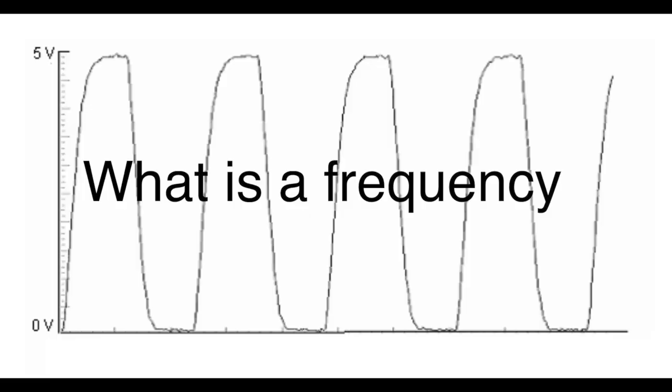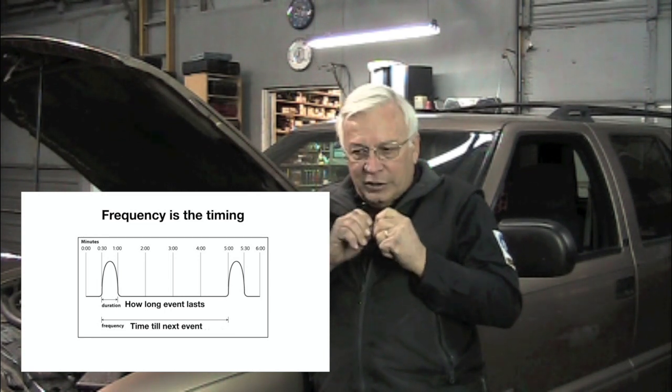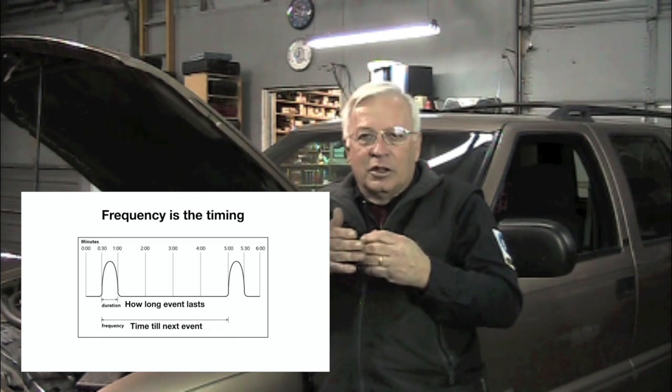So what is a frequency? Frequency can basically be explained like this: it's on/off time. If we're going to flow current, we've got to turn it on and flow some current and then turn it off. The longer or the shorter the on/off time is what creates the frequency — makes the frequency longer or shorter — and that's what we're measuring on the mass air flow.